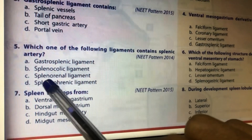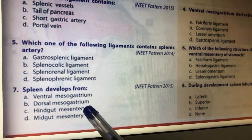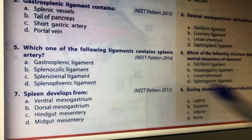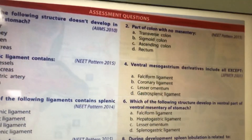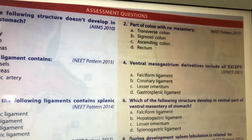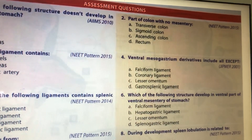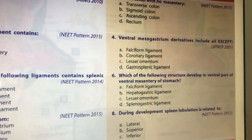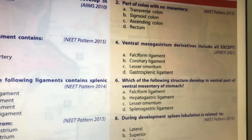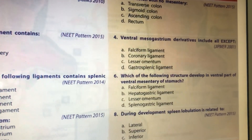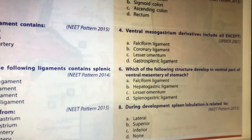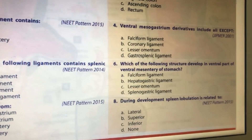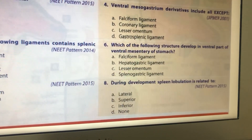The spleen develops from the dorsal mesogastrium. The part of the colon with no mesentery is the rectum. Ventral mesogastrium derivatives include the falciform ligament and lesser omentum — the coronary ligament is a derivative of the falciform ligament. The gastrosplenic ligament is not a derivative of ventral mesogastrium.